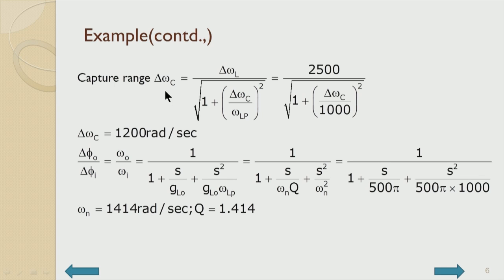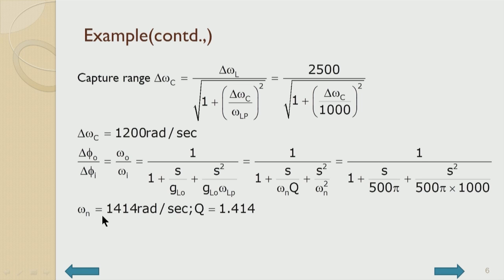Substituting for the capture range — lock range divided by this expression — and solving the quadratic equation, one obtains a capture range of approximately 1200 radians per second. Delta phi naught by delta phi I equals 1 by 1 plus S by G_L0 plus S squared by G_L0 times omega_LP, where omega_LP equals 500 pi times 1000 radians per second. So omega_N of this designed system comes out to be 1414 radians per second and Q equals 1.414.